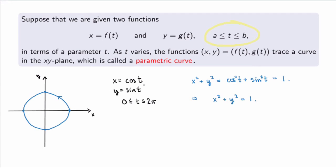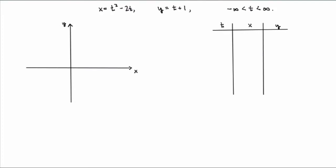The parametric curve includes the additional information of an orientation for the circle. Now let's study a second example. We're given x equal to t² minus 2t and y equal to t plus 1, with no restriction on the range for the parameter t. To find the curve, we choose values of t and plot the corresponding points. For t equals 0, x equals 0 and y equals 1.